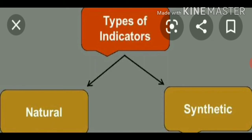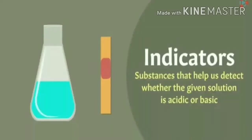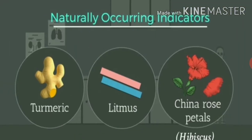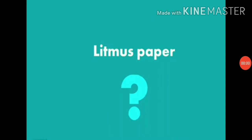So it is clear that indicators are substances that help us detect whether the given solution is acidic or basic. First we will consider naturally occurring indicators — we will start with turmeric, litmus paper, and china rose petals. The most commonly used natural indicator is litmus.